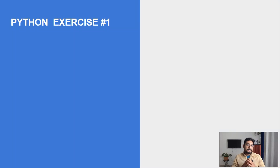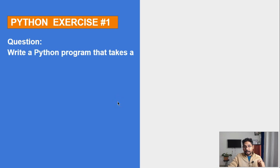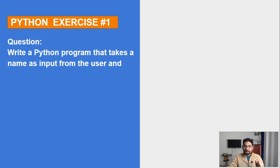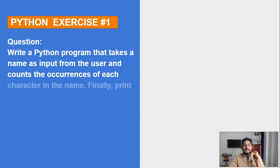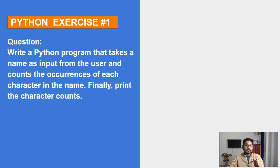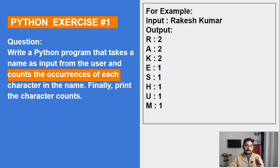Hey guys, welcome to the Python exercise series for the interview. Let's see our very first question: write a Python program that takes a name as input from the user and counts the occurrences of each character in the name, then print the character counts. For example, if the user inputs 'Rakesh Kumar', the output should say R is present two times, A is present two times, M is present one time, and so on.